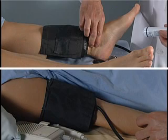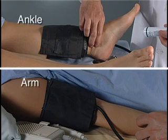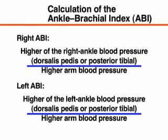To calculate the ankle brachial index, divide the systolic blood pressure from the ankle by the systolic blood pressure from the arm. Use the higher systolic pressure from the dorsalis pedis or posterior tibial artery for the calculation of the ankle blood pressure. Also, use the higher brachial systolic pressure, as a lower arm blood pressure may be due to arterial occlusive disease in one of the upper extremities.